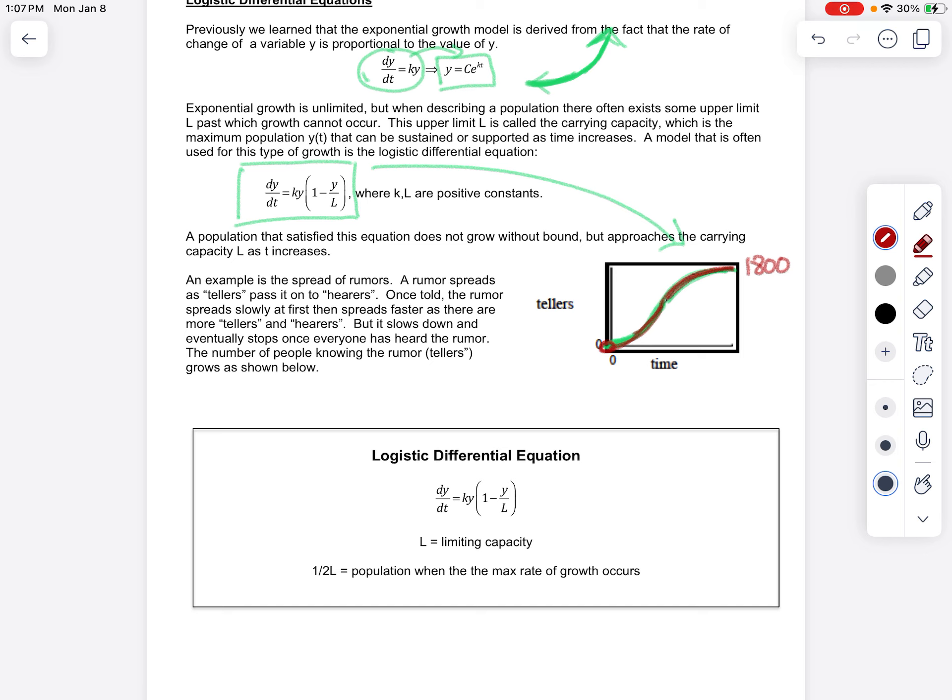A couple noted things that you'll notice about the graph. Notice that it starts out concave up, then it's concave down. Notice the slope is always positive. But the second derivative would go from positive to negative. So right here would be your point of inflection.